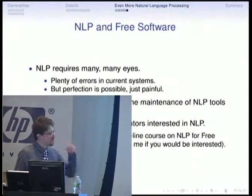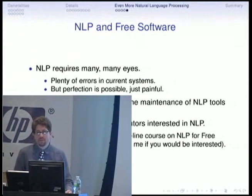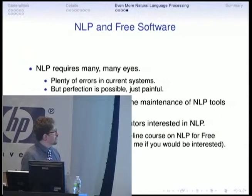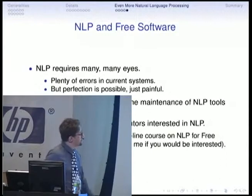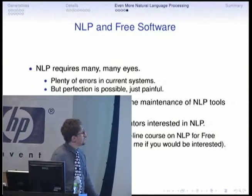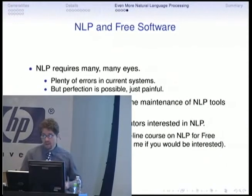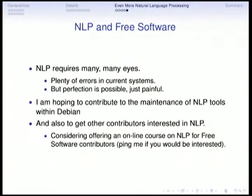Systems tend to be very heuristic in nature. We haven't unveiled some underlying truth about how the human mind processes language — we have a bunch of ifs and some statistical models. But perfection is possible, it's just painful. If we have a task we care about, we can work together and make it work. That's one of the reasons why I'm more interested in contributing to free software than to pure scientific things — I believe we can get performance from the sixties up to the nineties percent by working together. I'm also starting to work more on maintenance of NLP tools within Debian, and I'm considering offering some sort of online course for free software contributors around these days.